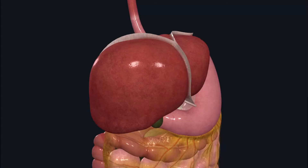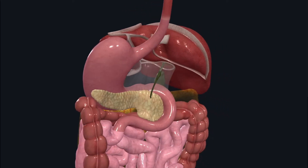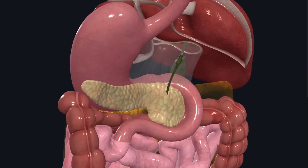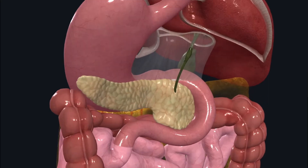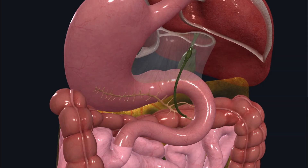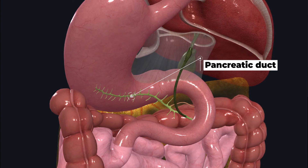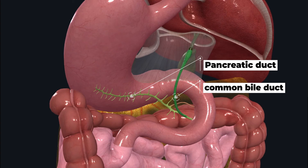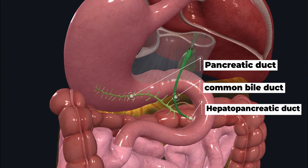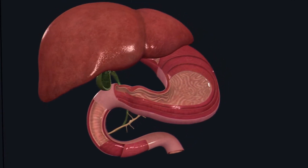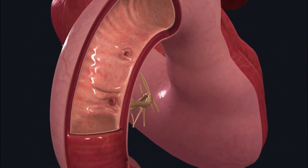Another important extrinsic gland associated with the GIT is the pancreas. The pancreas has both endocrine and exocrine functions, but when talking about the digestive system, the exocrine function — pancreatic juice secretion — is what we are concerned about. The pancreas has a huge number of invaginations which secrete pancreatic juice into the pancreatic duct. The pancreatic duct combines with the bile duct from the liver to form the hepatopancreatic duct, which drains into the duodenum. This opening is guarded by a sphincter known as the sphincter of Oddi.